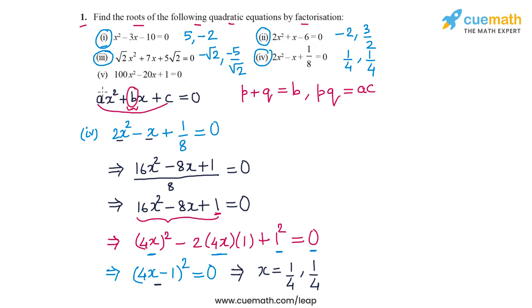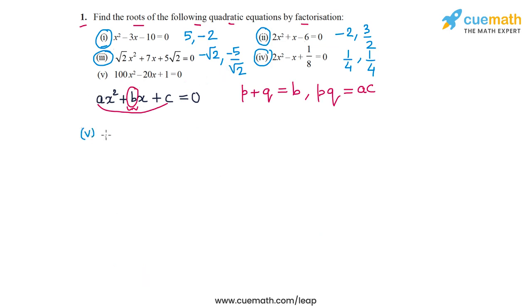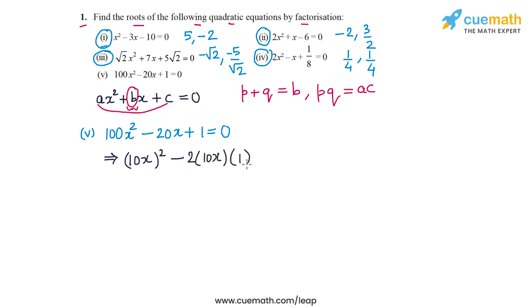Now let's do part 5. The equation is 100x² - 20x + 1 = 0. Just like in part 4, this is a perfect square. We can write it as (10x)² - 2(10x)(1) + 1² = 0, which is of the form a² - 2ab + b². So it factorizes as (10x - 1)² = 0.